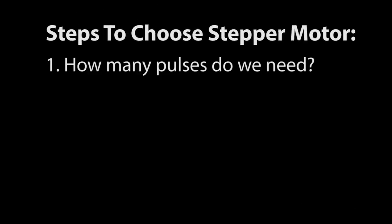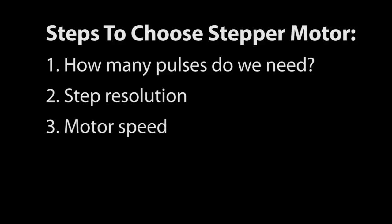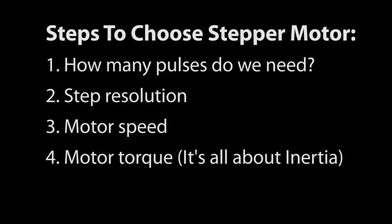There are five things we need to figure out. How many pulses do we need to make the move? What's the position resolution we need? How fast does the motor need to turn? How much torque do we need? And to figure out torque we'll need to figure out the inertia of the system. Given all those, we'll now be able to select the appropriate motor for our application.